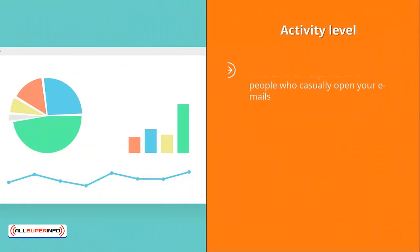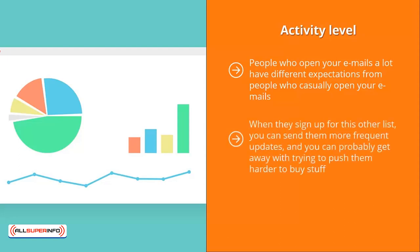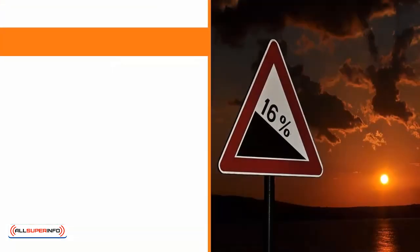Activity level: people who open your emails a lot have different expectations from those who casually open them. For people who are very engaged with your mailing list, you might want to ask them to sign up for another list in exchange for a reward. When they sign up for this other list, you can send them more frequent updates and push them harder to buy, since they've already made it a habit to open and read your emails. Less frequent openers can remain on your main list and receive updates at regular intervals.